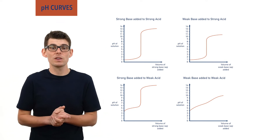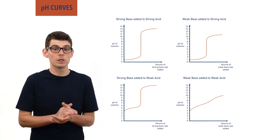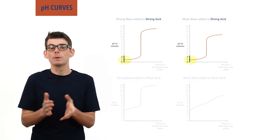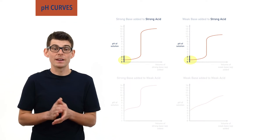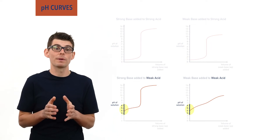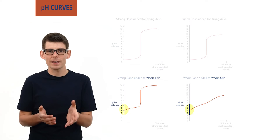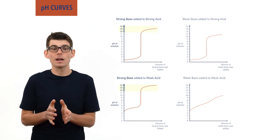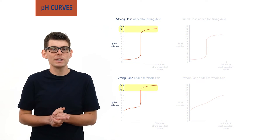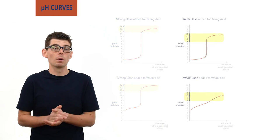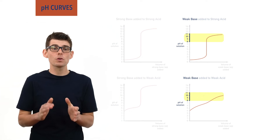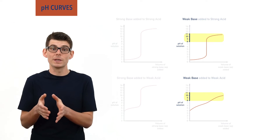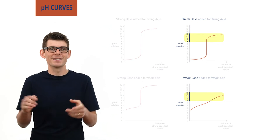The starting and final pHs are based on the type of acid and base being used. For strong acids, the pH would likely start around the 0 to 2 mark, depending on the concentration of acid being used. And for weak acids, the pH would likely start around the 3 to 6 mark, again depending on the exact weak acid and its concentration. Equally, if a strong base is used, the pH will end up somewhere very high, near the 12 to 14 mark, and if a weak base is used, a bit lower, probably around 8 to 11. If you're unsure as to why this is the case, please check the video on acids and bases, where the terms strong and weak acid and base are explained.